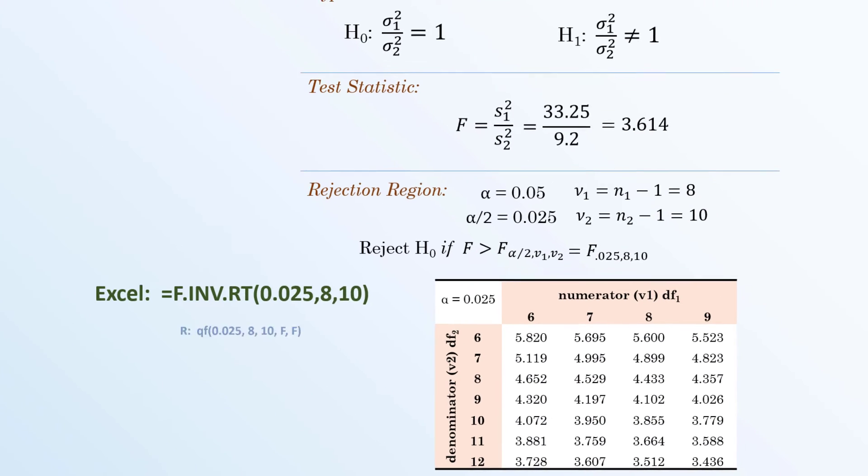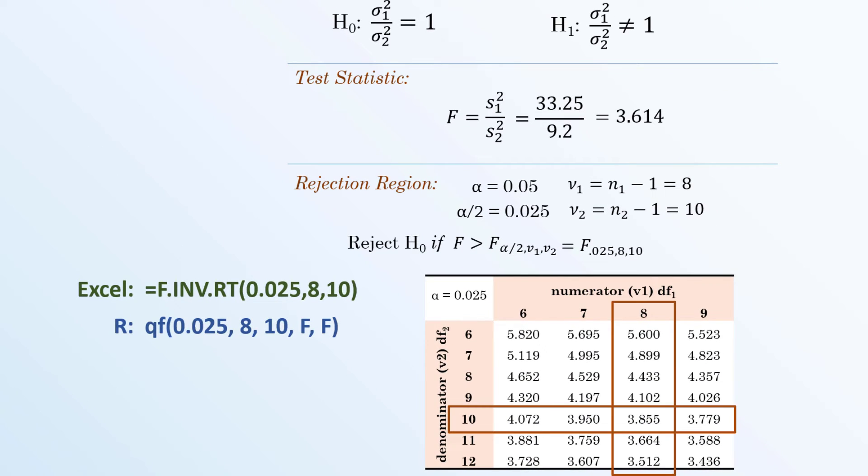We can look that up in the F-table for alpha equals 0.025, or use software to find the critical value of 3.855. Note that this right-tailed critical or rejection region is sufficient when the sample variance in the numerator is larger than in the denominator.